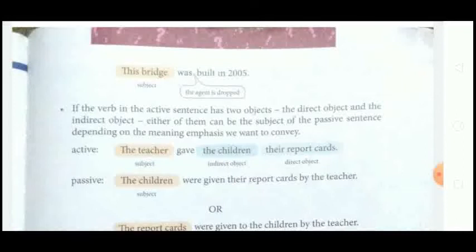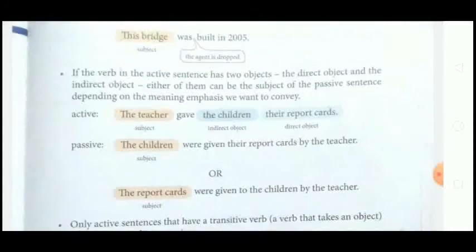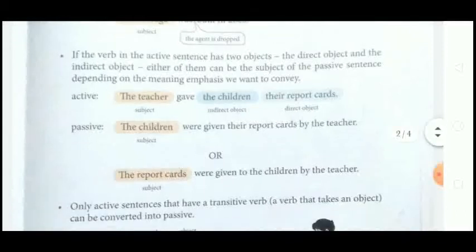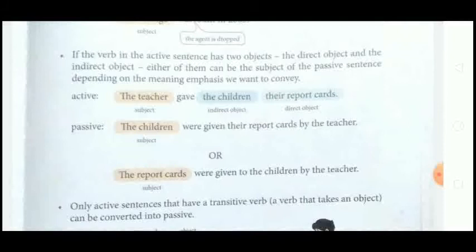For example, active: 'The teacher gave the children their report cards.' Here 'the teacher' is the subject; 'the children' is the indirect object and 'their report cards' is the direct object. Two possible passive sentences: (1) 'The children were given their report cards by the teacher' — using the indirect object as subject; (2) 'The report cards were given to the children by the teacher' — using the direct object as subject. Both are valid depending on the intended meaning.